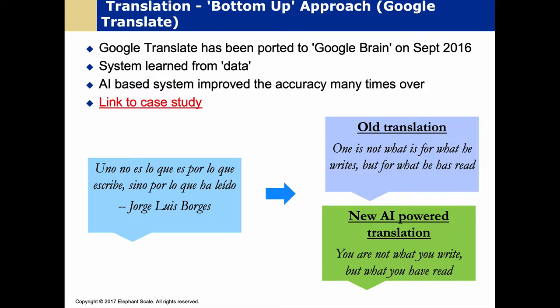Google Translate works best for translations where there's a lot of data available — like English to Spanish or English to French. For translations between smaller language pairs with less data between each other, we might not expect as good a translation. This illustrates the core principle: more data leads to better performance.